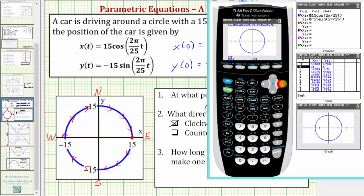it will show me the orientation or the direction the curve is traced as t increases. So if I press the right arrow, notice as t increases, the circle is traced out in a clockwise direction.